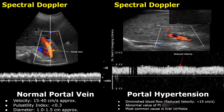The pulsatility index is approximately less than 0.3. The normal diameter of the portal vein can vary but it is usually between 1 and 1.5 centimeters.